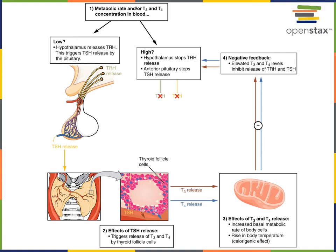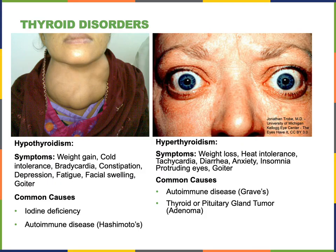Iodine deficiency, disrupting the production of T3 and T4, removes this negative feedback mechanism, leading to excessive TSH production, which causes the goiter. Insufficient thyroid hormone signaling is known as hypothyroidism. The most common cause of hypothyroidism is iodine deficiency. With insufficient iodine, the thyroid gland cannot produce the thyroid hormones thyroxin and triiodothyronine. This leads to disruption in negative feedback, causing elevated levels of TSH. As TSH is a tropic hormone, it stimulates growth of the thyroid gland, producing a goiter — an enlargement of the thyroid gland.